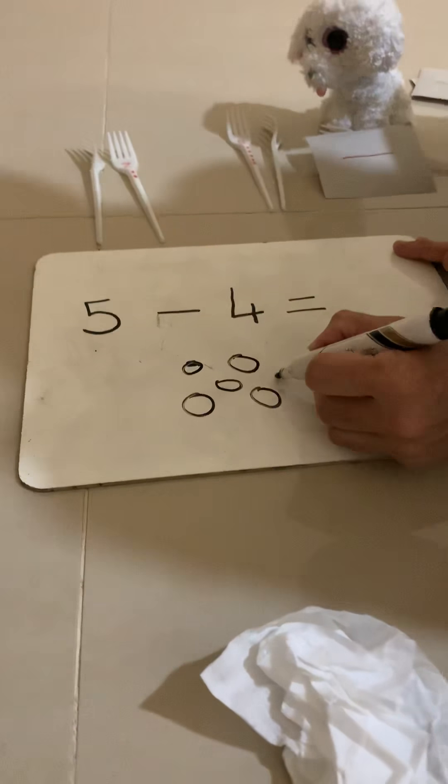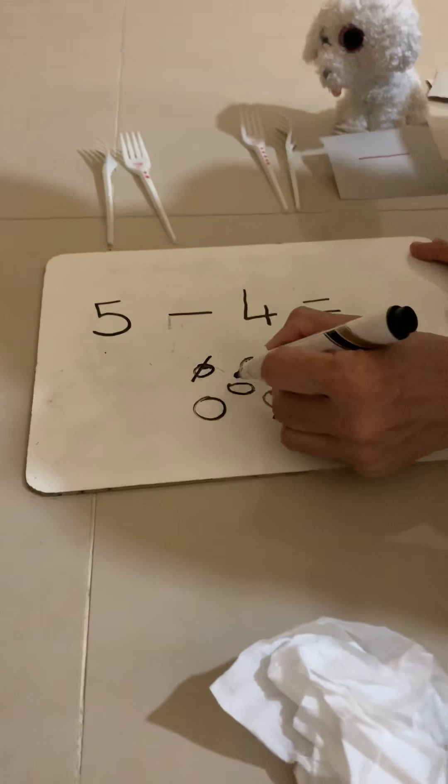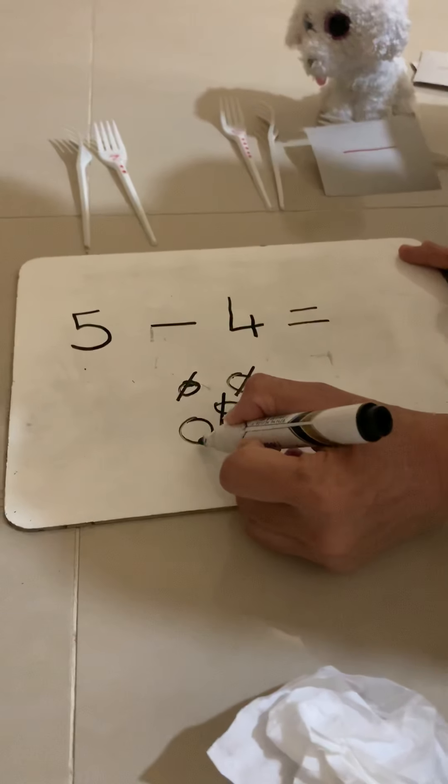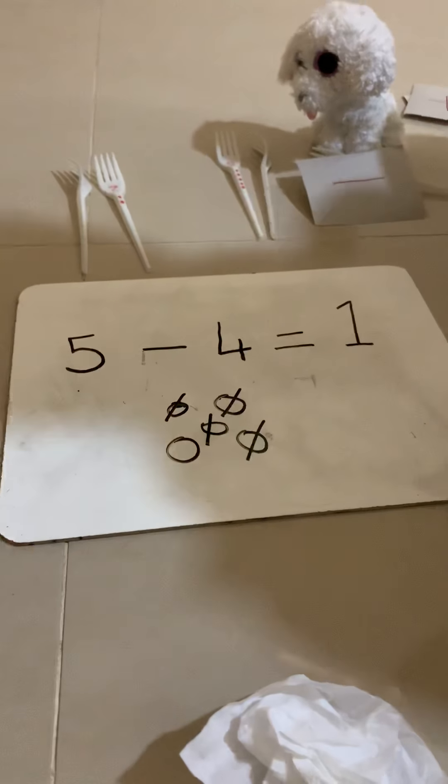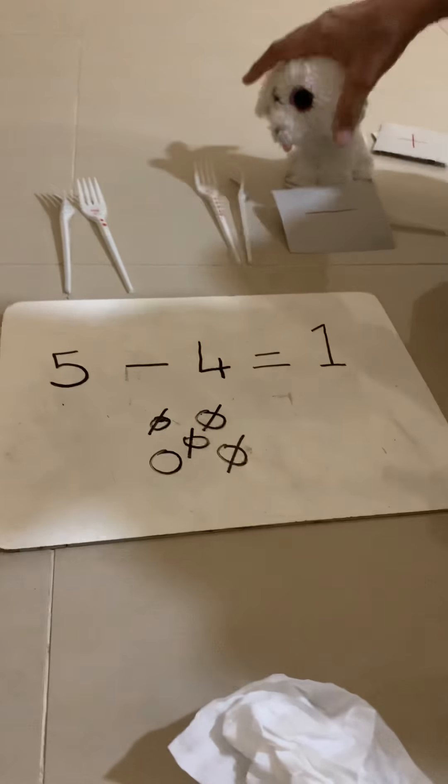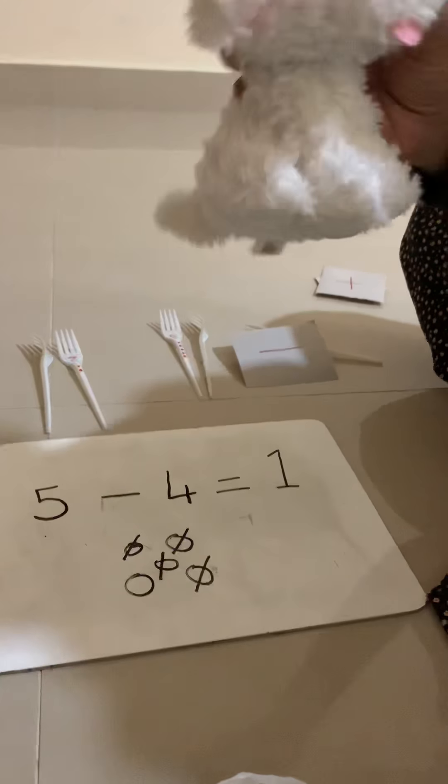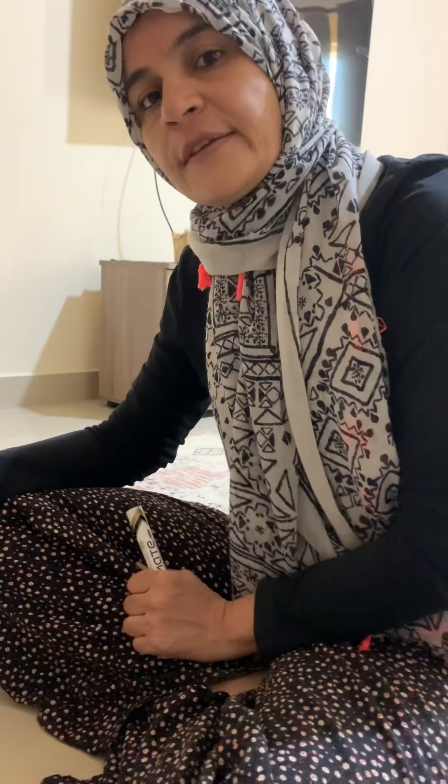So we have a five, and then we put a take away sign. We're going to be taking away four, and equals to what? We have five. Let's do it here all together: one, two, three, four, and five. If I take away four, so we have to cut one, two, three, and four. So how much am I left with? One! Good job. That's what I want you to do now. Pepe is also going to be working hard.